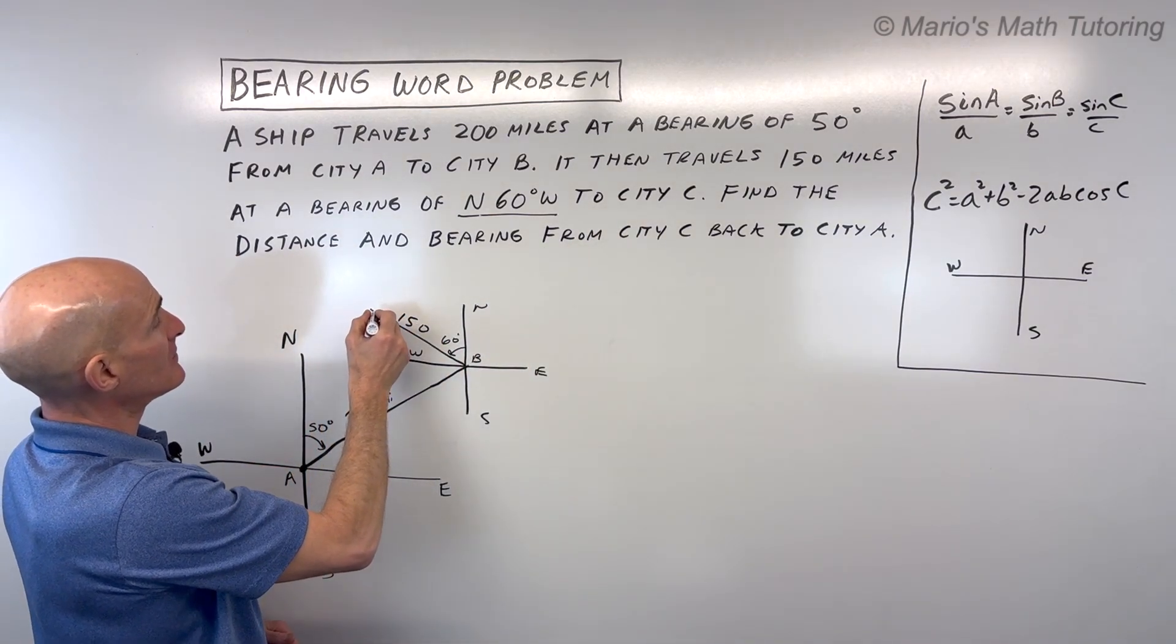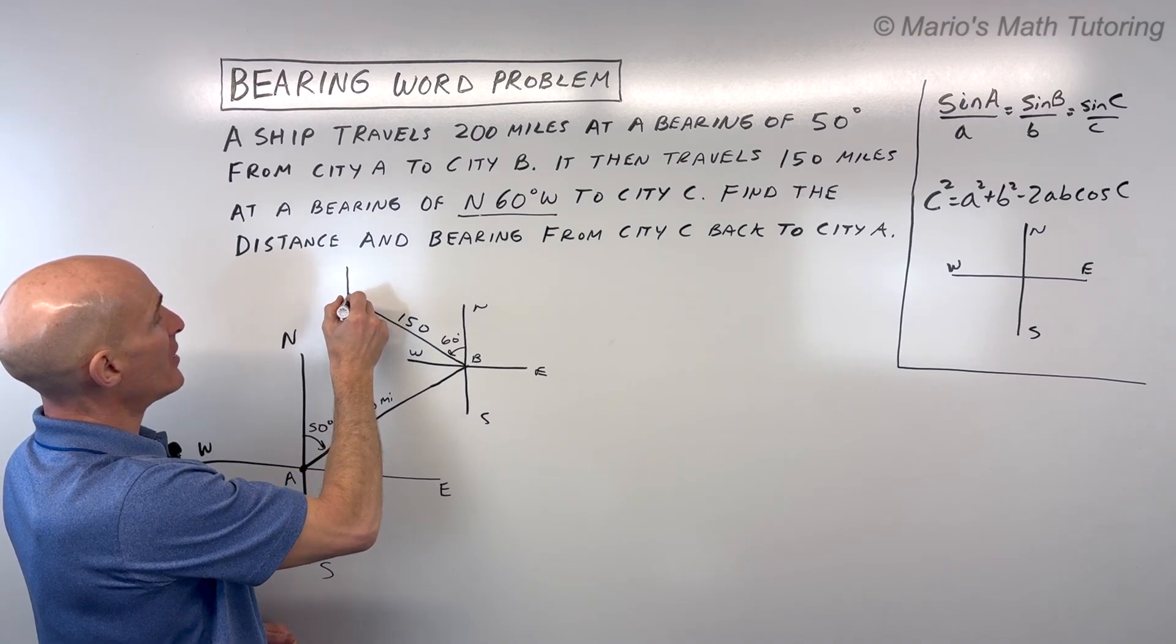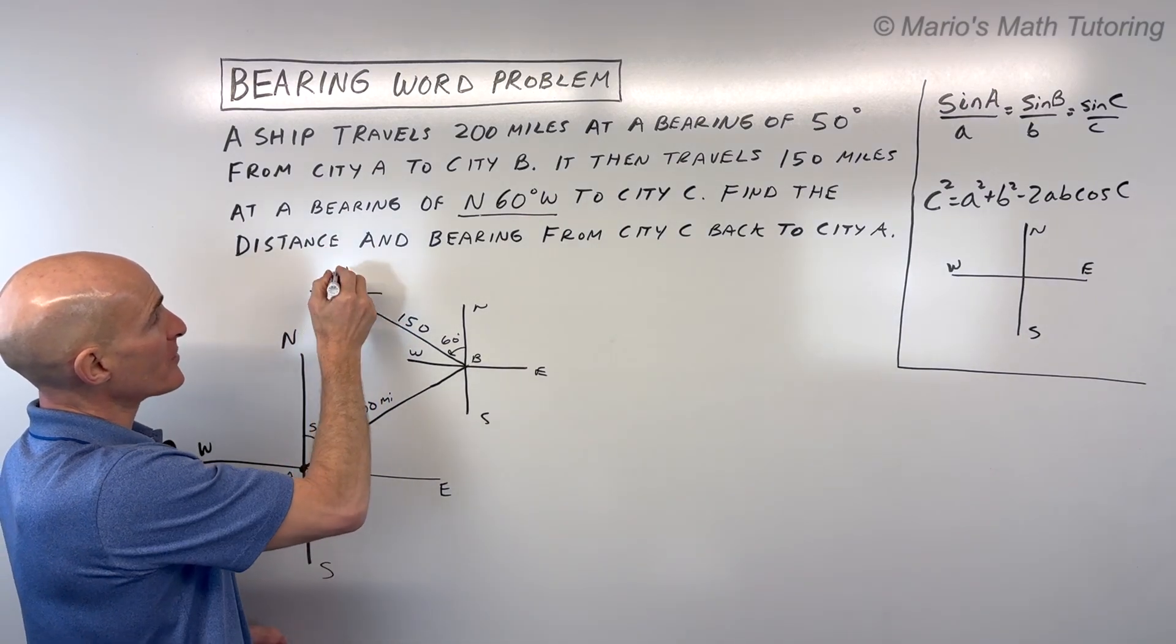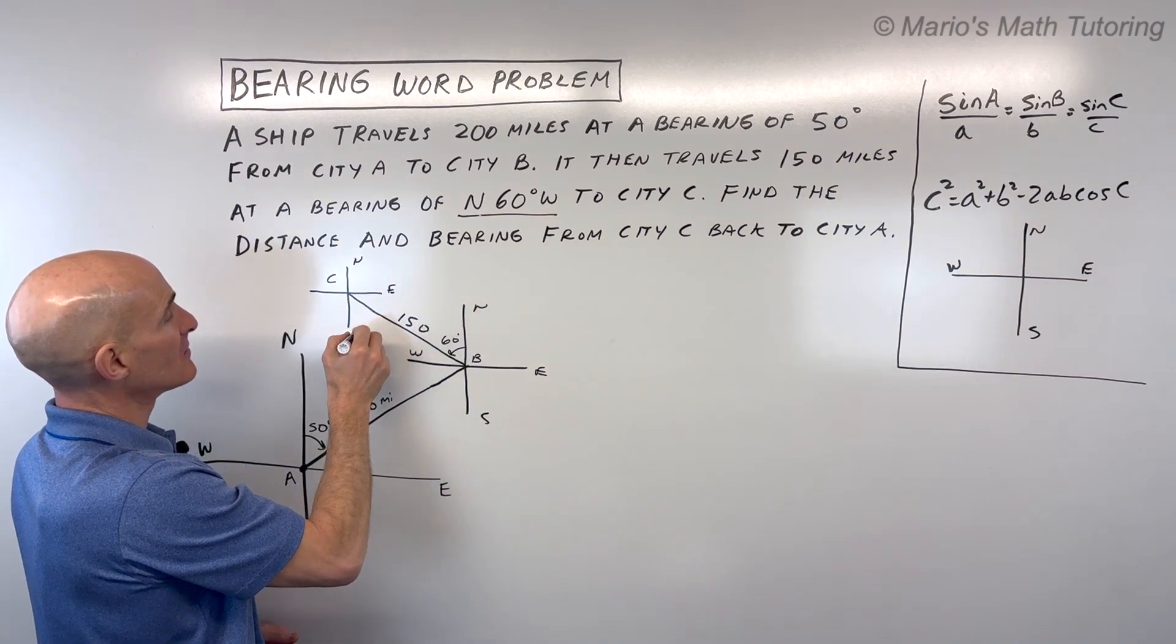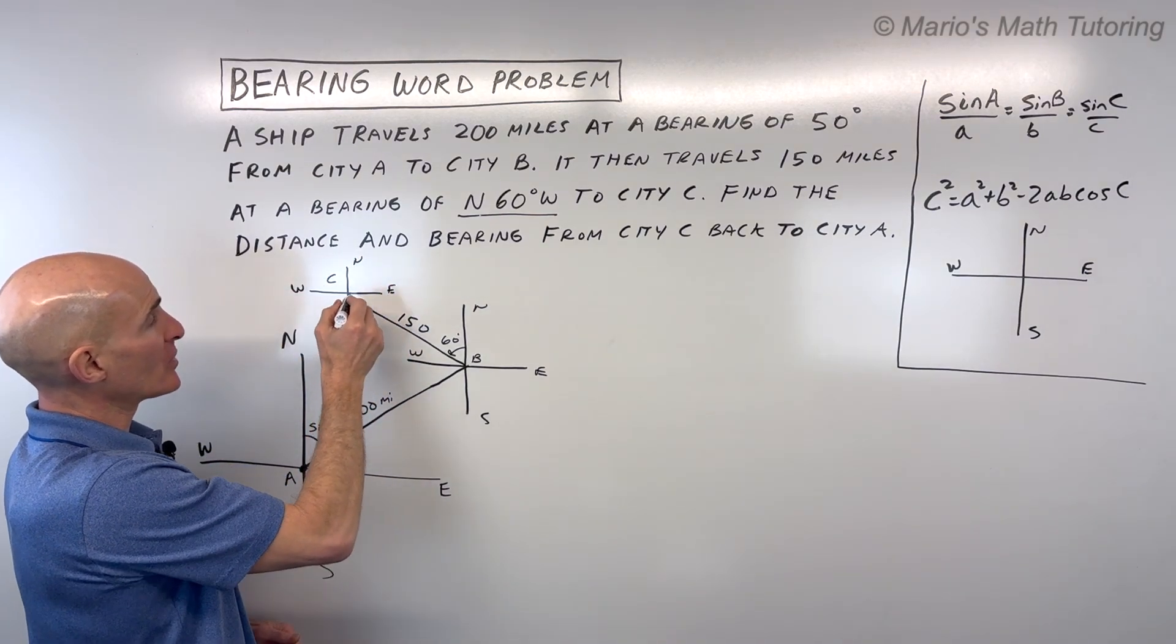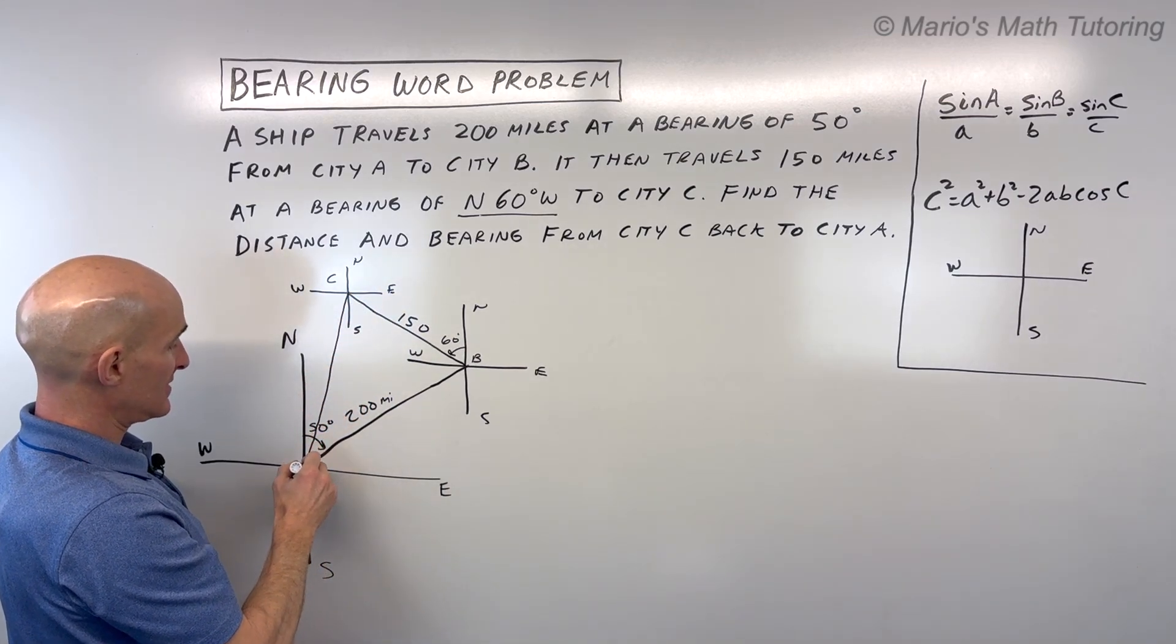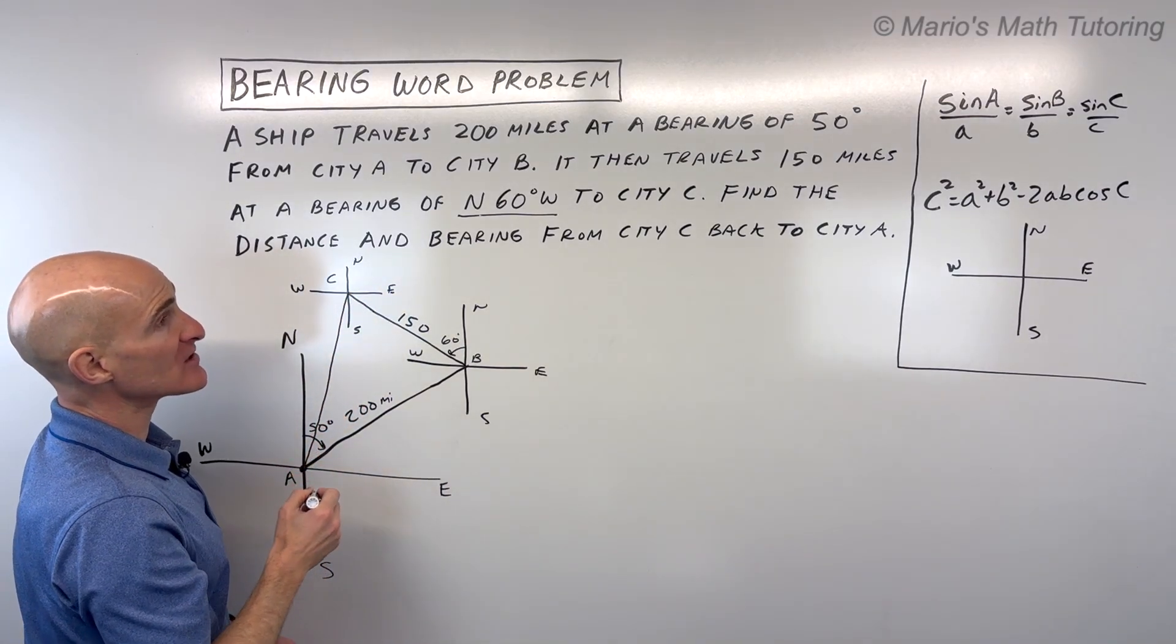This is city C. We're going to draw another northeast-southwest and we're going to go from city C back to city A. So we need to find what's the distance and what's the bearing from city C to city A.